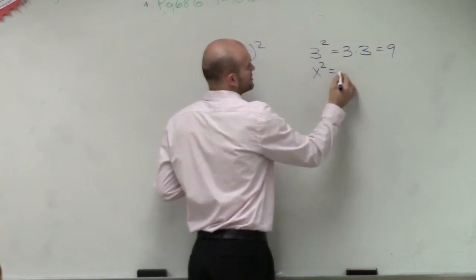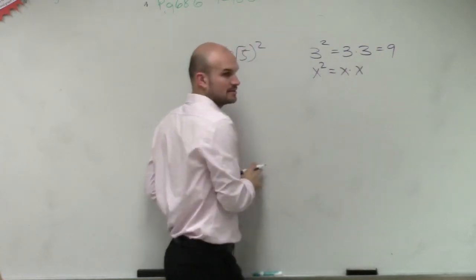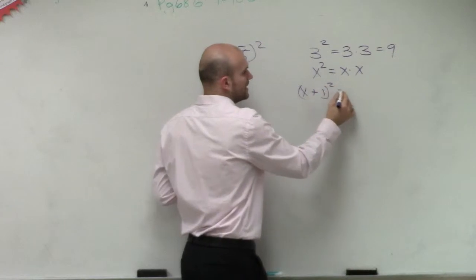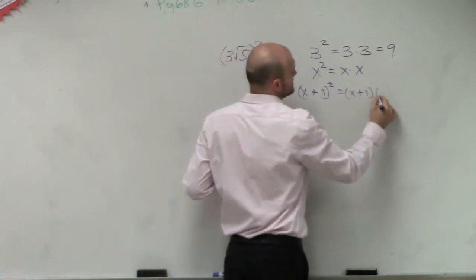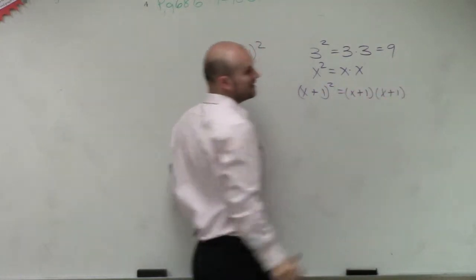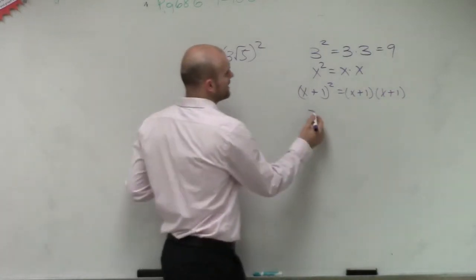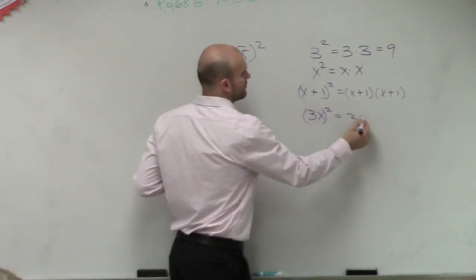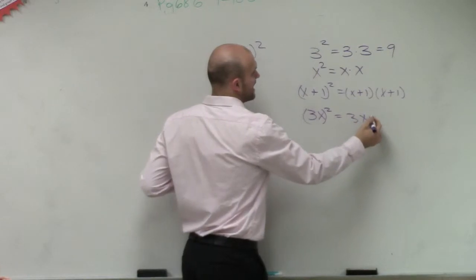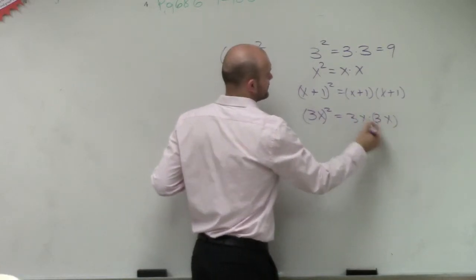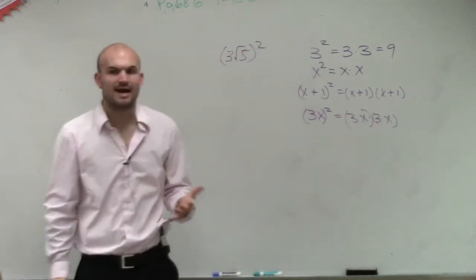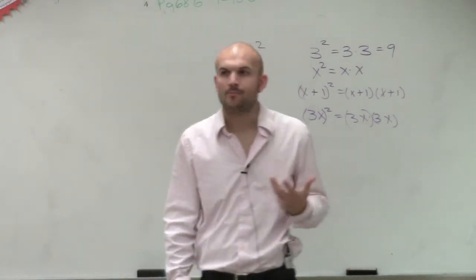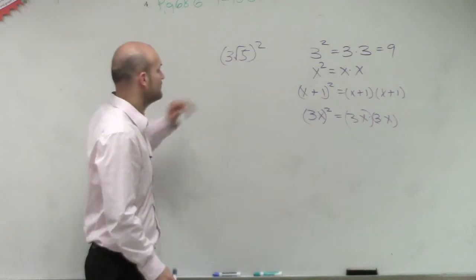x squared equals x times x. x plus 1 squared equals x plus 1 times x plus 1. Or even 3x squared equals 3x times 3x. You need to remember whenever we have a quantity squared, we need to multiply that quantity by itself.